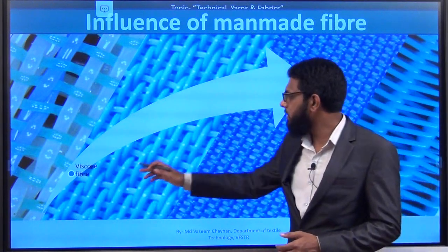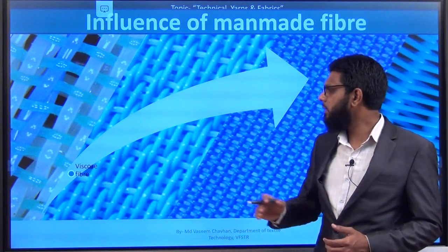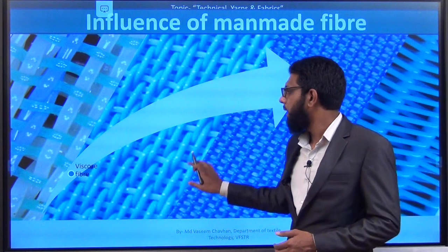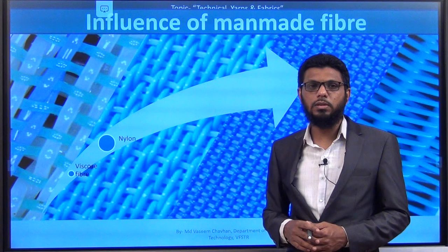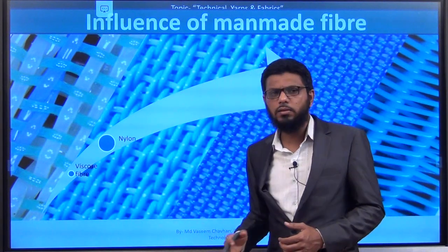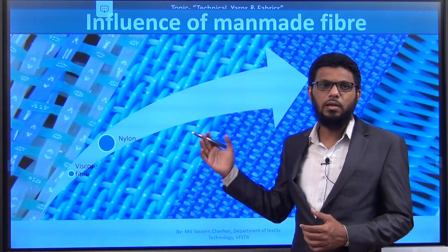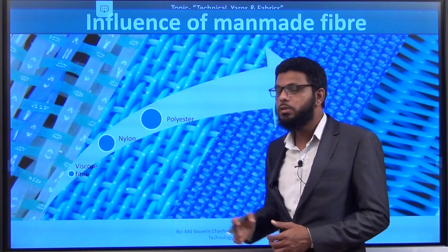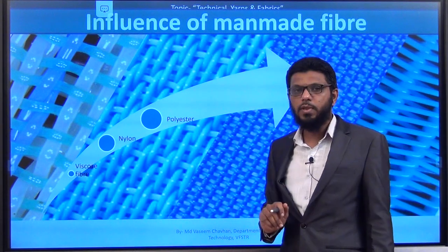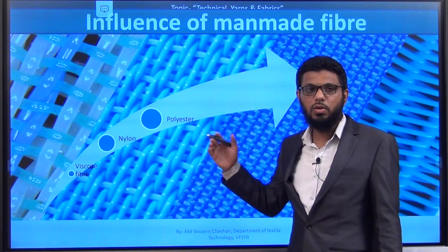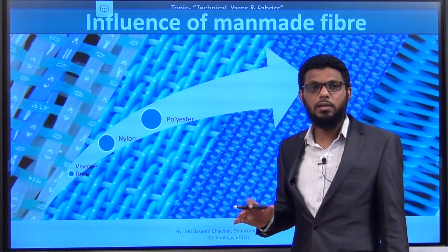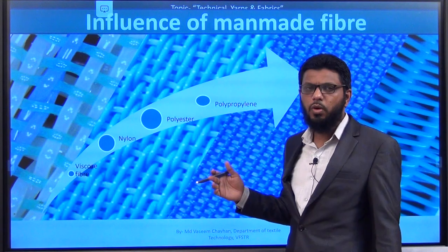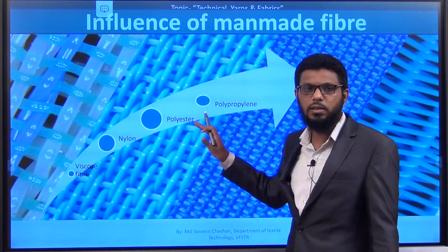Afterward, one by one, fibers came into the market. The first man-made fiber was viscose, which gained some segment of technical applications replacing cotton because of its superior properties. Then nylon came into the market by DuPont Company around the 1940s, gaining market because of its abrasion resistance and strength. The main boom took place when polyester was introduced after nylon, initially for apparel but later gaining a large market segment, with around 50% or more market share today. Then polypropylene and polyolefin fibers also came with limited segments.